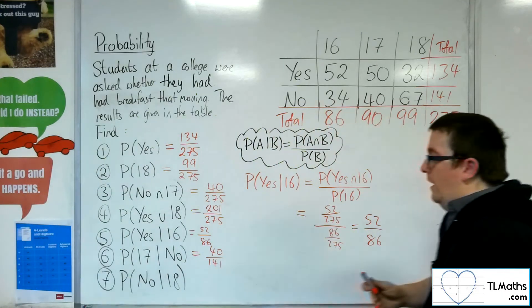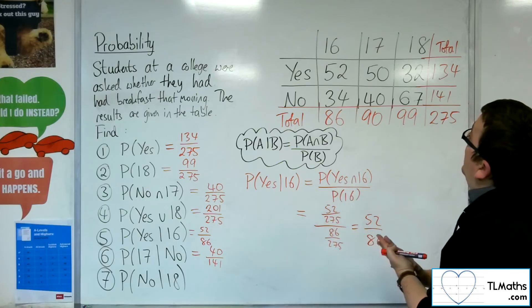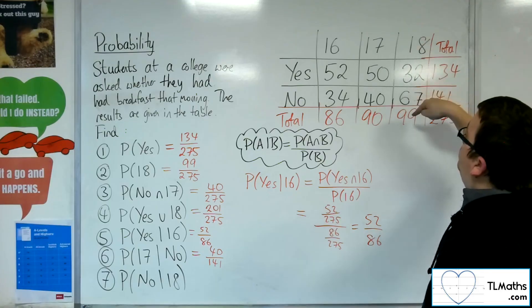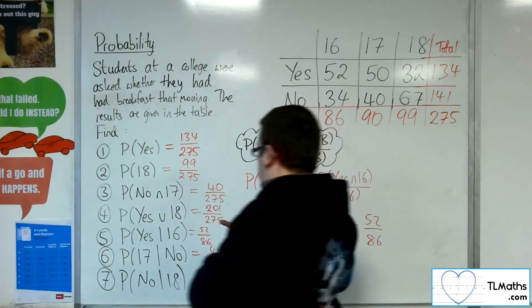And last one, the probability of not having breakfast given that they were 18. So given that they're 18, just looking at that column, what's the probability of them not having breakfast? Well, it's 67 out of 99.